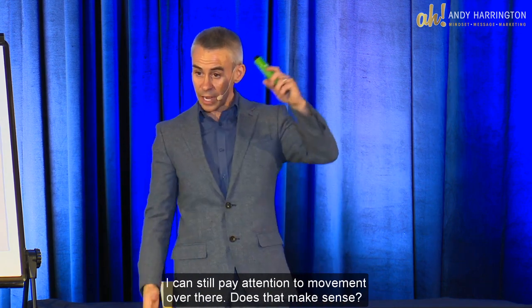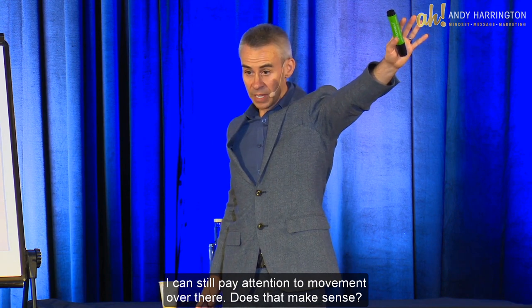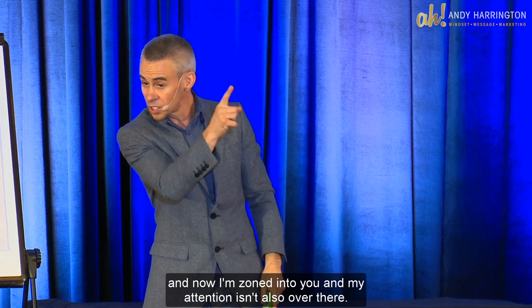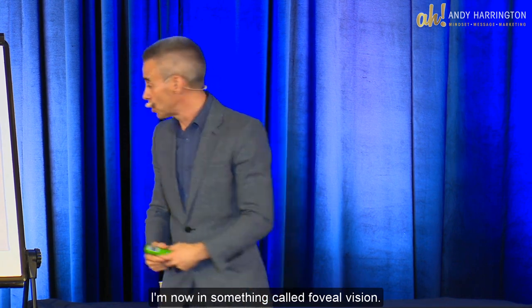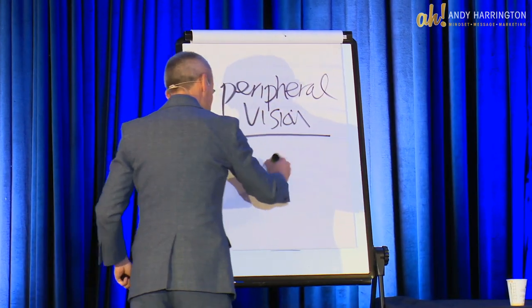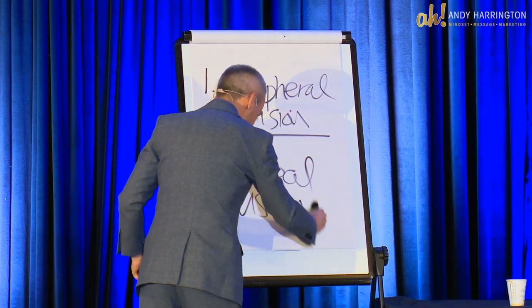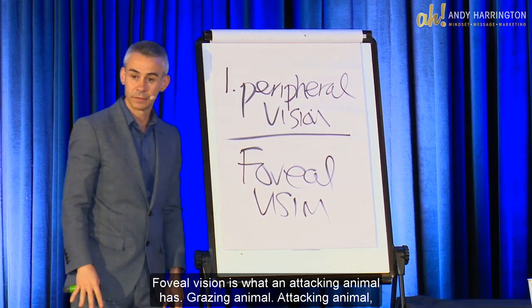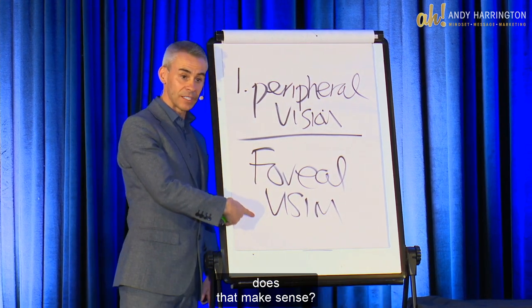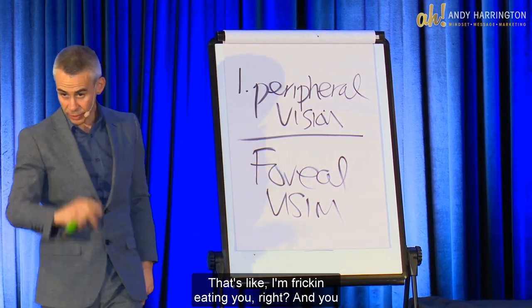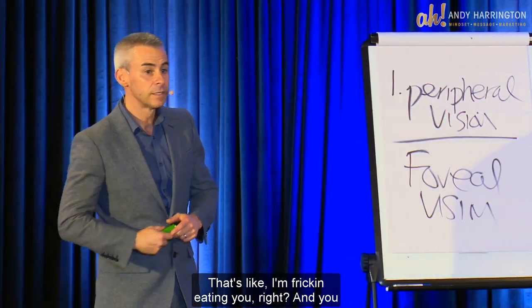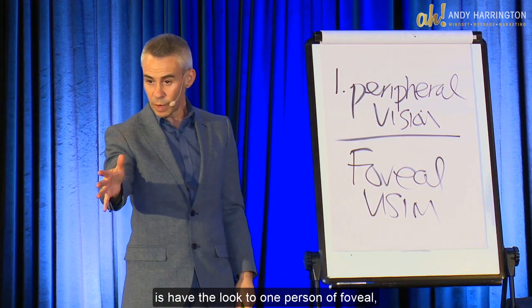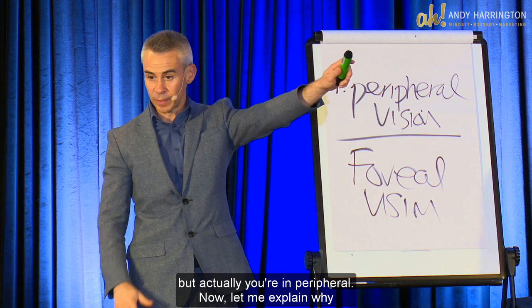Even though I might be looking here right now, I can still pay attention to movement over there. If I just look at you and exclude everything else completely, and I'm zoned into my audience but my attention isn't also over there, I'm now in something called foveal vision. Foveal vision is what an attacking animal has — grazing animal versus attacking animal. You don't want foveal vision. What you want is to have the look of foveal to one person, but actually be in peripheral.